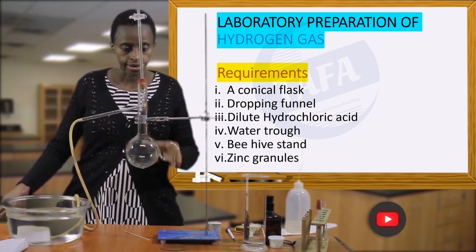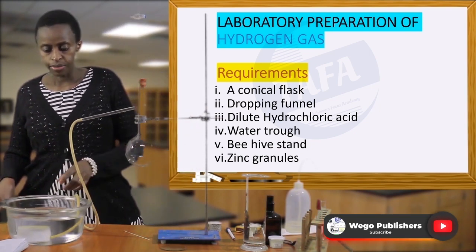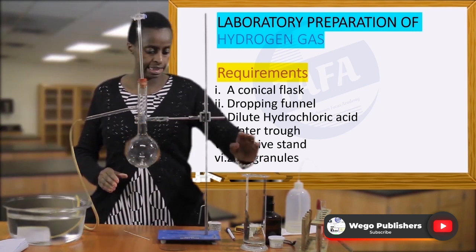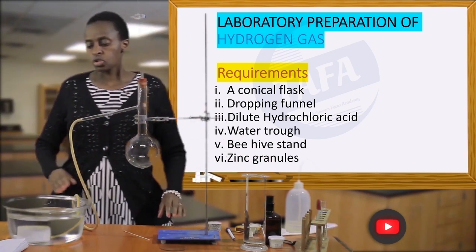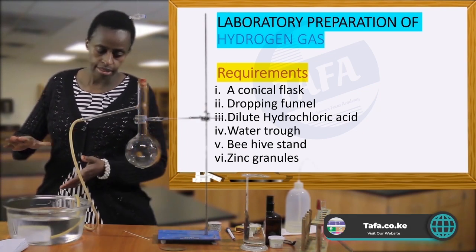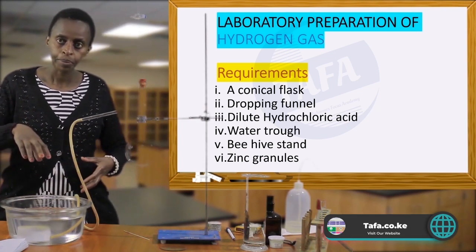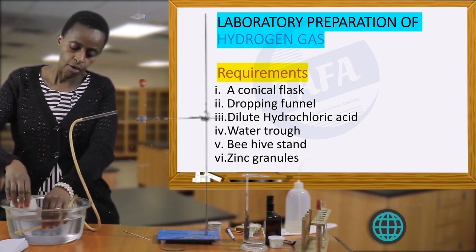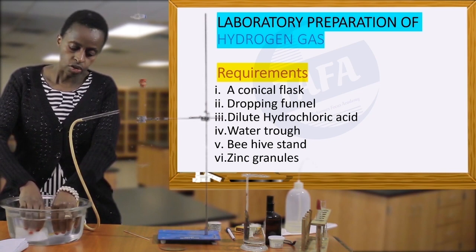that you're pouring down the flask. You have a delivery tube that goes right into this water trough, onto which we are going to place the gas jar so that we are able to collect the hydrogen gas. The gas jar will be placed on the beehive shelf or beehive stand so that we are able to collect the gas.